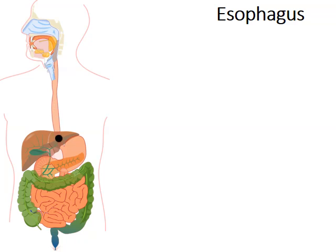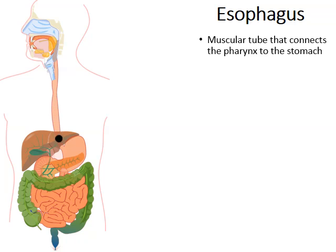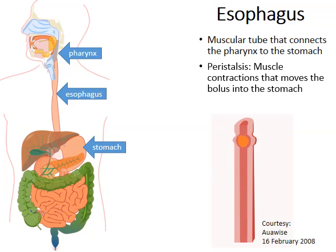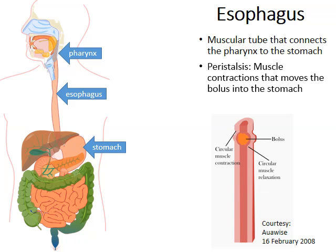The esophagus is a muscular tube that connects the back of the throat — the pharynx — to our stomach. There's a series of muscle contractions that will push the food bolus from the pharynx down to the stomach. This wave of muscular contractions is what is known as peristalsis, and these peristaltic contractions push the bolus into the stomach.